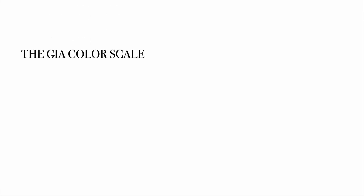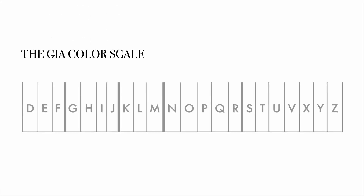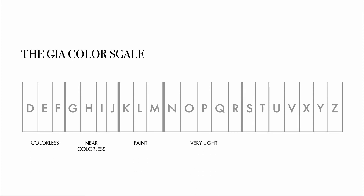The GIA's color grading scale for diamonds is a standard used by industry professionals all around the world. The letters D to F represent colorless, and continues with increasing shades of color to the letter Z, with light yellows or browns. The exception from this list are fancy colored diamonds, which are very rare and valuable.